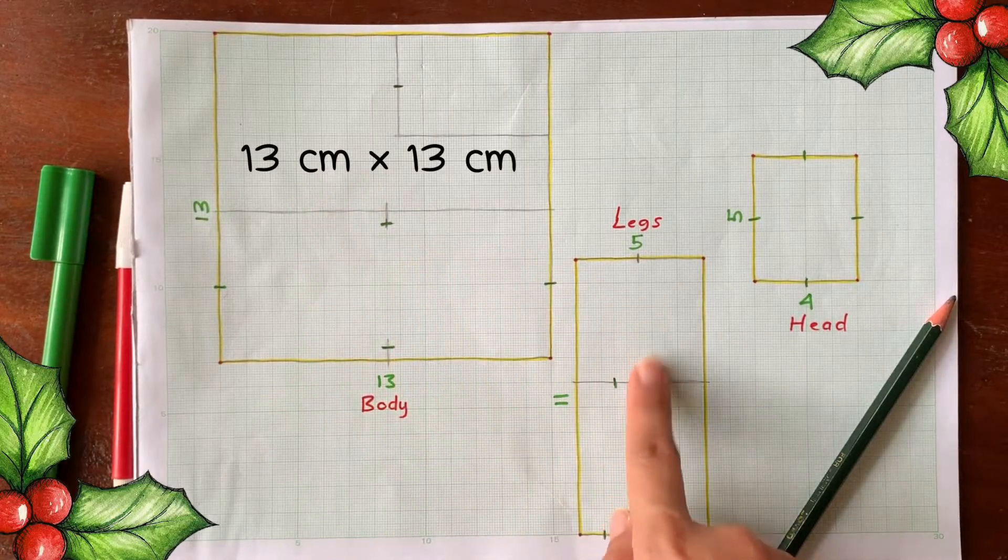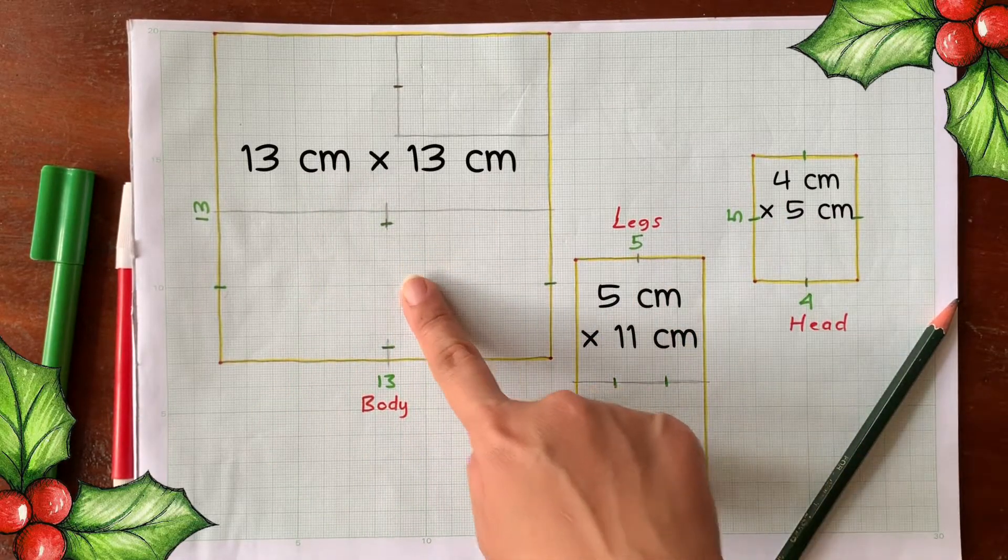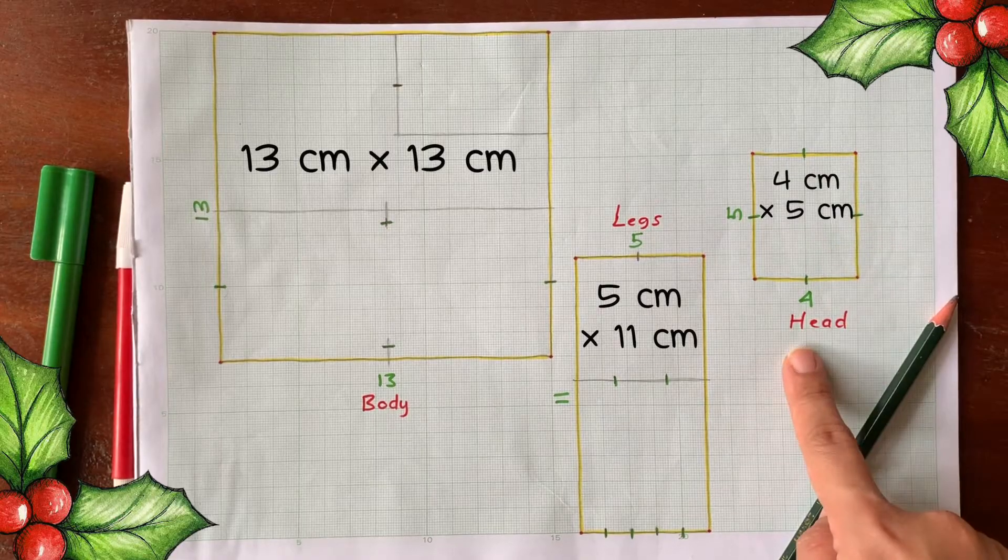Ok, first draw these three rectangles in this size, for the body, legs and head.